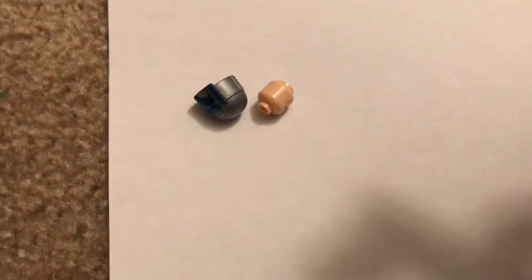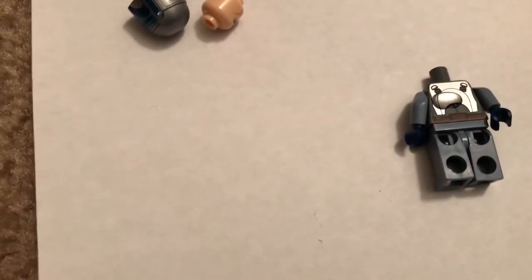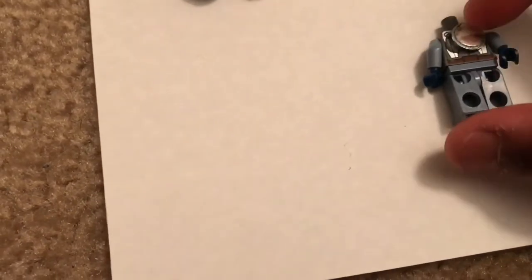Now I would probably suggest taking the arms off of the figure because you wouldn't want those getting stuck, would you? So now you're just going to take one magnet and turn it backward just like this. Just like that.